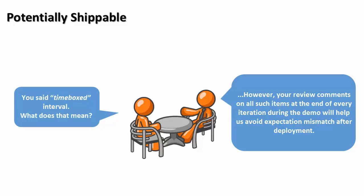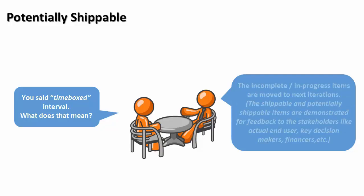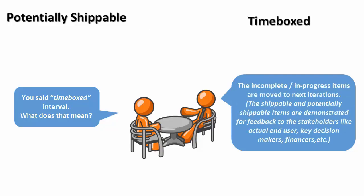You said time-boxed interval — what does that mean? The time box means our iteration or sprint will be over when the iteration cycle time is over. The incomplete or in-progress items are moved to the next iteration.